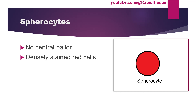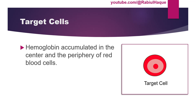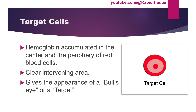Another morphology is called the target cell. Here the red blood cells will accumulate hemoglobin in the center as well as in the periphery, with a clear intervening area between the center and periphery, giving the appearance of a bullseye or a target. These type of cells are known as target cells.